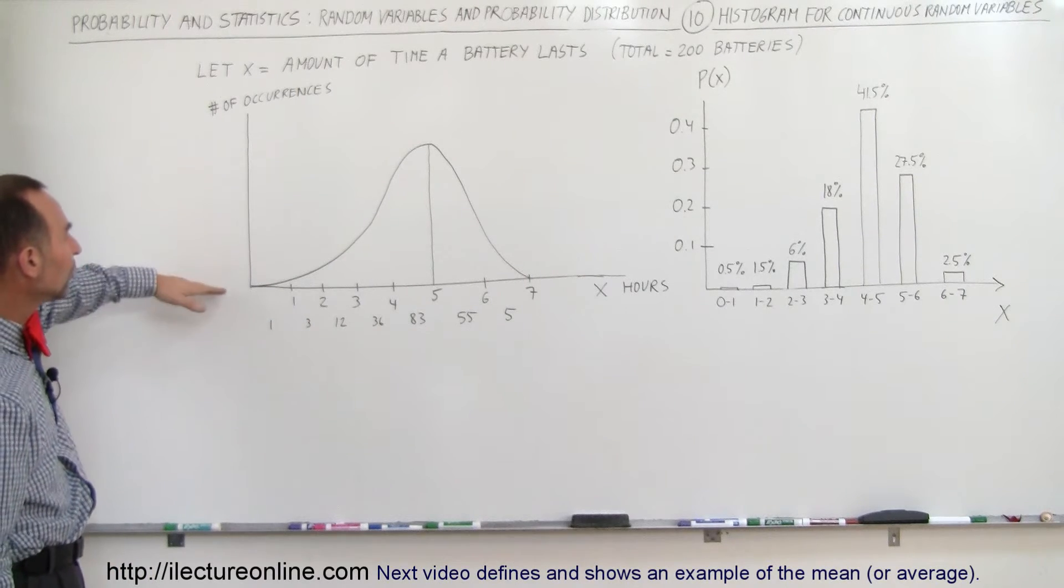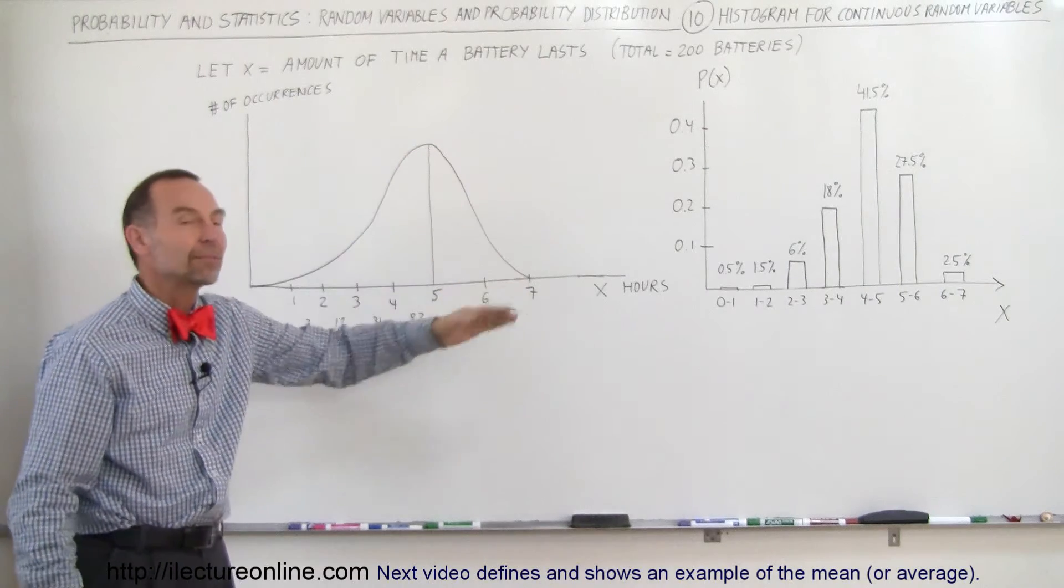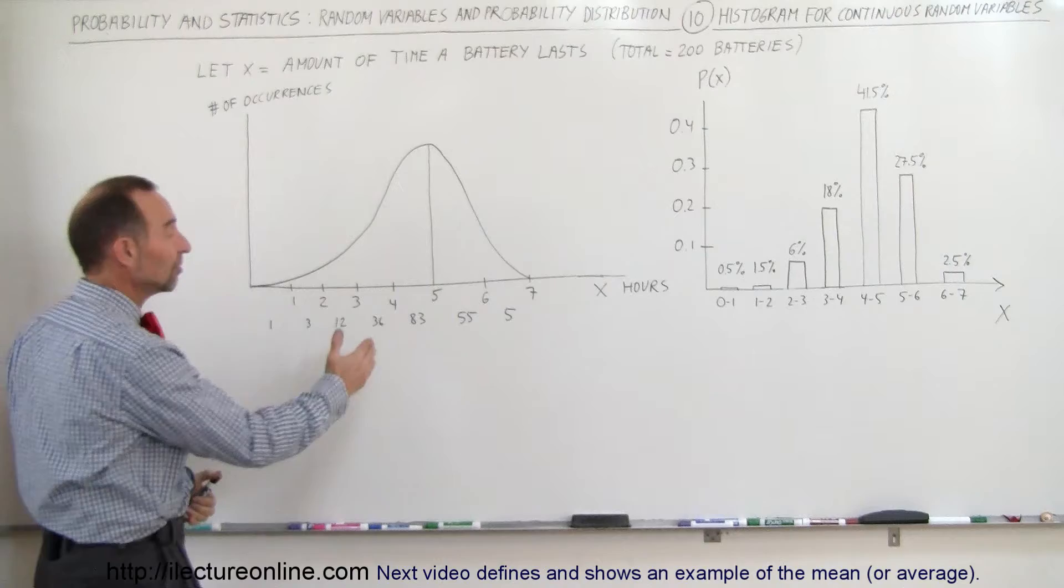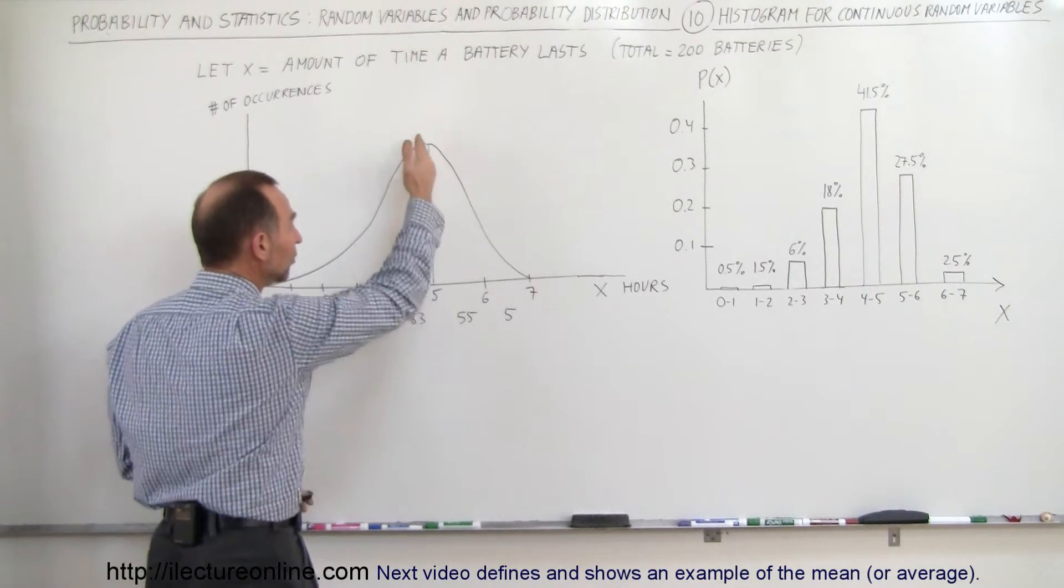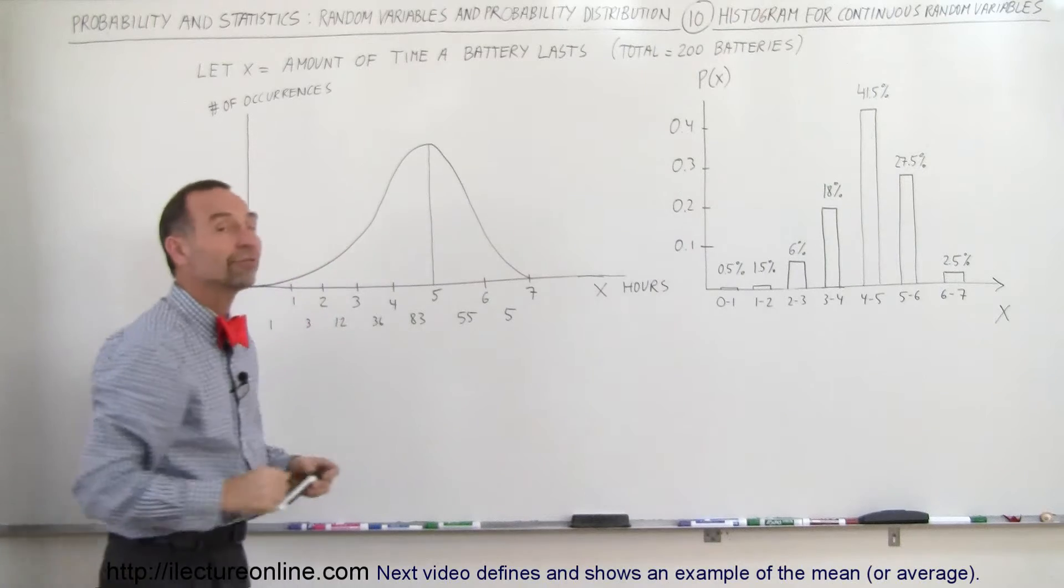With 200 batteries, we can see there's a continuous change in the amount of time that batteries last. They seem to peak right around five hours, but quite a few last less than five hours and quite a few last more than five hours.